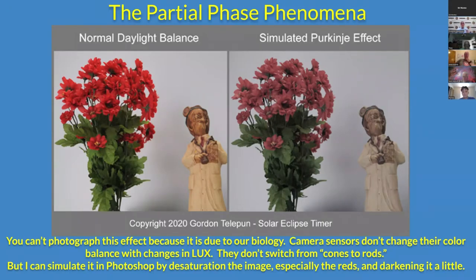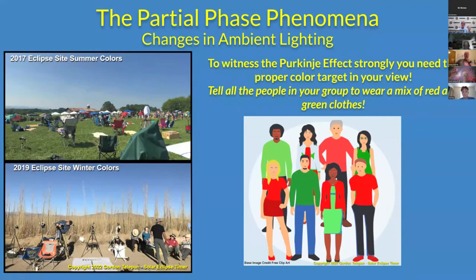You can't photograph the Purkinje effect because it's biological — it's the switching from cones to rods. Camera color sensors don't change their color sensitivity with the decrease in lux, but I can fake it in Photoshop to show you what it looks like. The bright reds become more desaturated and everything gets a gray cast. It's very eerie and weird, and really something you have to experience. But you have to know what you're looking for because it only happens for about three to five minutes before totality at second contact.